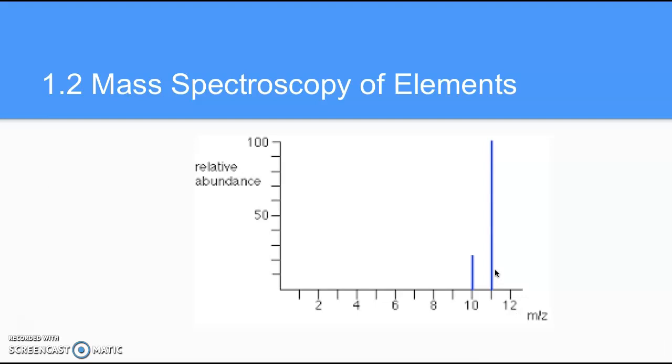The data for a mass spectrometer looks like this. So you end up with these peaks, which show you on the y-axis you have relative abundance. This could also be percent abundance. And then you have the masses on the bottom. So in this case, we have particles with a mass of 10, and you also have particles with a mass of 11.